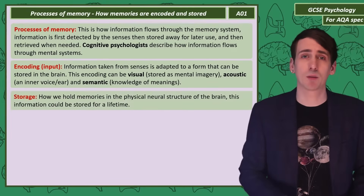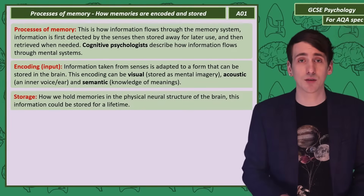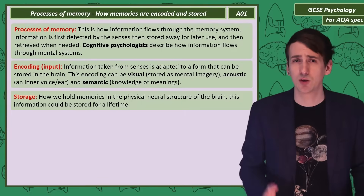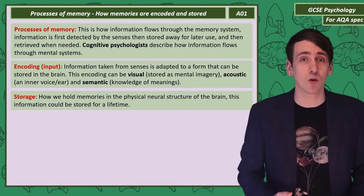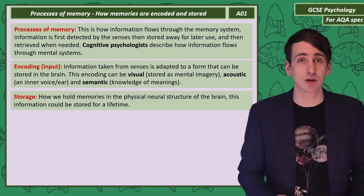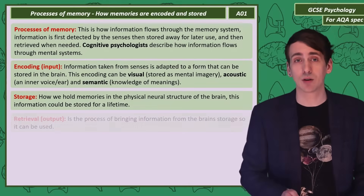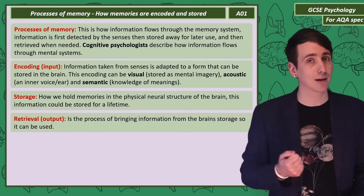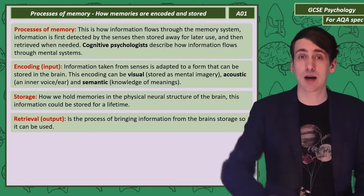Storage is a word you're probably very familiar with, and in this context we're just applying it to how your brain, made of neurons, might manage to keep all of that information sometimes for your entire life. Retrieval is getting that information stored by those neurons back and then using it, which is output.